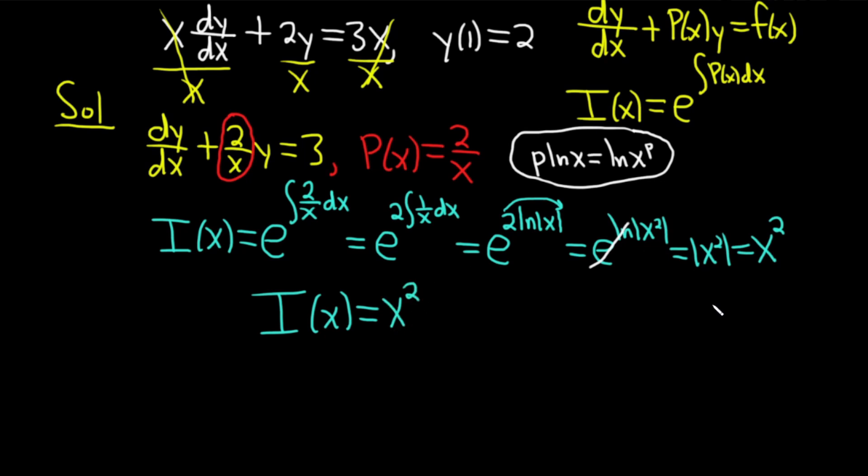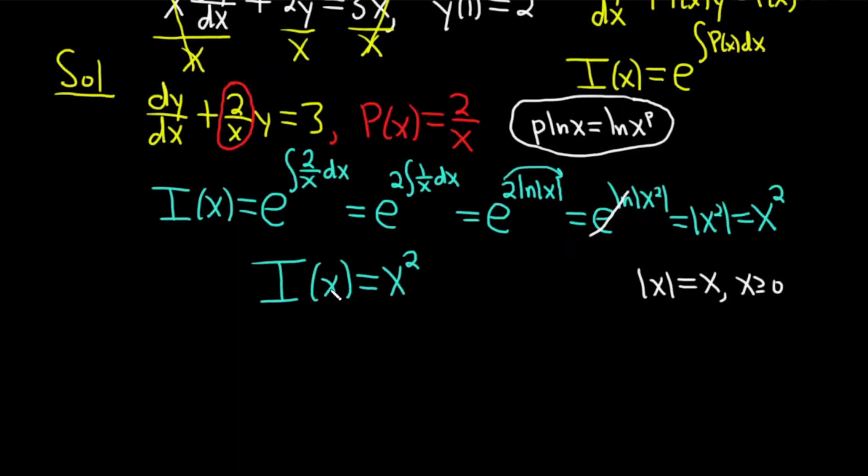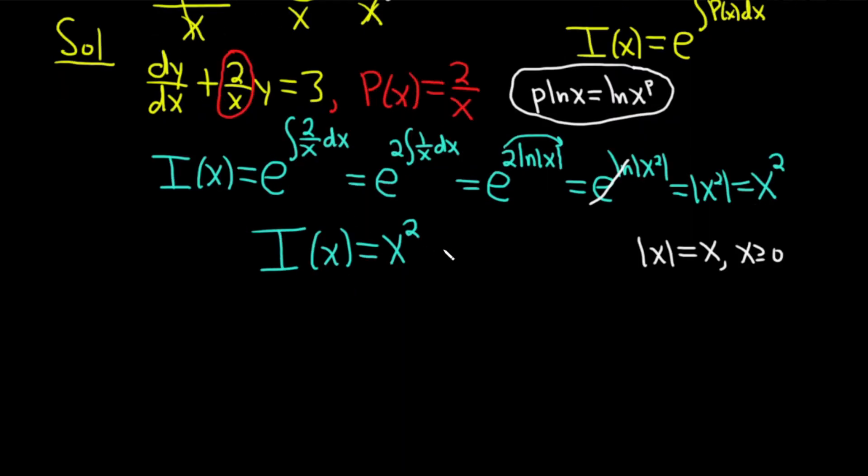So I(x) = x². I should say something about that. A lot of times, for example, if you have the absolute value of x, you can just say it equals x, but then you have an assumption that x is greater than or equal to 0. It's always going to happen, and typically you'll drop it and not think about it. In some situations, you will have to come back and think about it. Now we can go to the next step, which is to multiply our differential equation by our integrating factor.